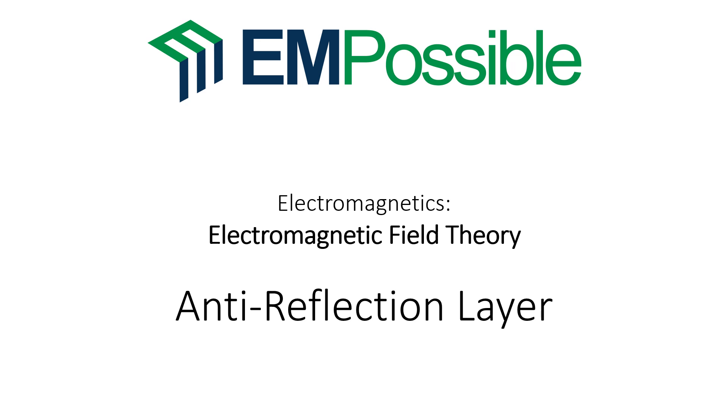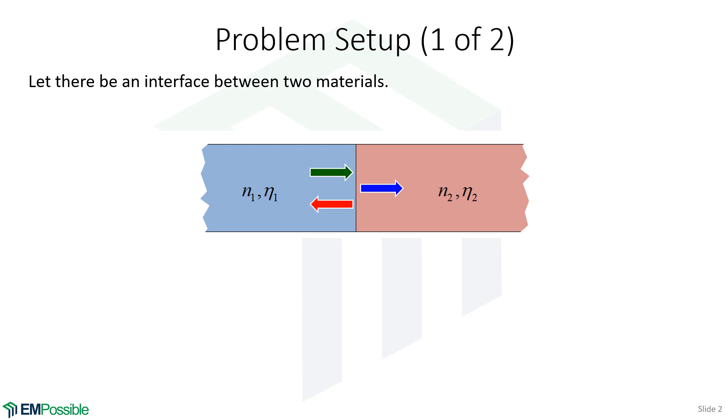Anti-reflection layer. Let's set up the problem for anti-reflection. Let's say we have the interface between two materials. So we have material one, we have material two, there's an incoming wave, and due to the impedance mismatch, we get a reflection and some transmission. But maybe we don't want the reflection. Maybe we want to zero out reflections.